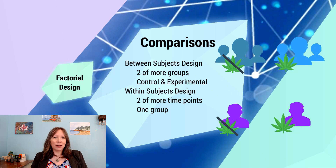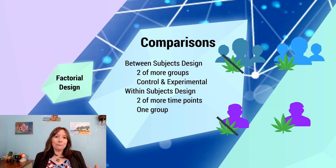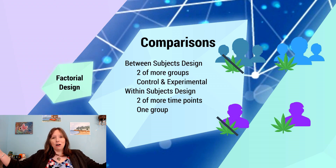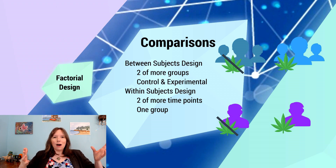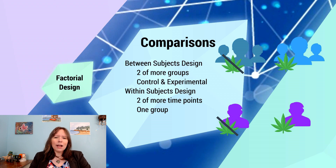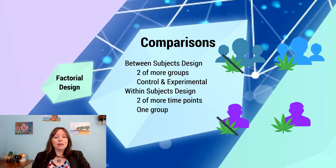This will hopefully clarify what I was just talking about with random assignment. When thinking about the procedure, there should be some type of comparison between our independent variables and our dependent variables. There are two main types of comparisons we tend to consider: between-subjects comparisons and within-subjects comparisons.